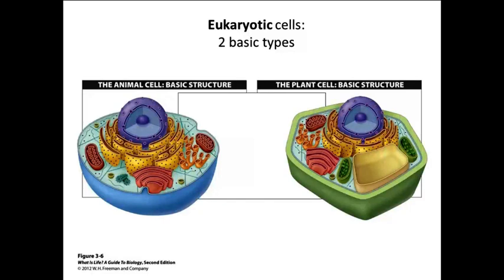Eukaryotic cells are the other type of cells and are more complex than prokaryotic cells. We just talked about five things that both prokaryotic and eukaryotic cells have. Now we're going to talk about components found just in eukaryotic cells. There are two basic types of eukaryotic cells: animal cells and plant cells — though fungi and protist cells are somewhere in between. For clarity, we'll focus on animal cells versus plant cells.